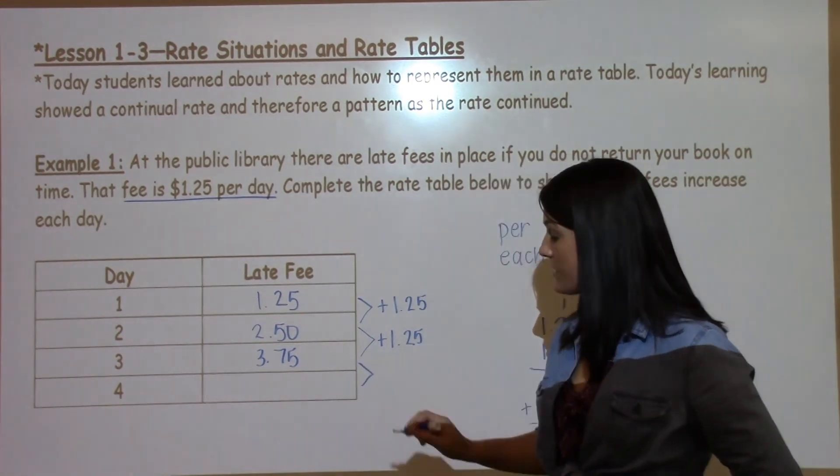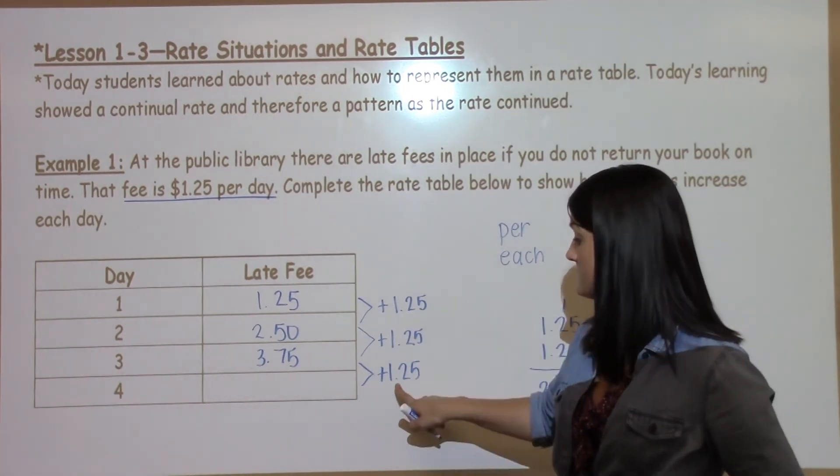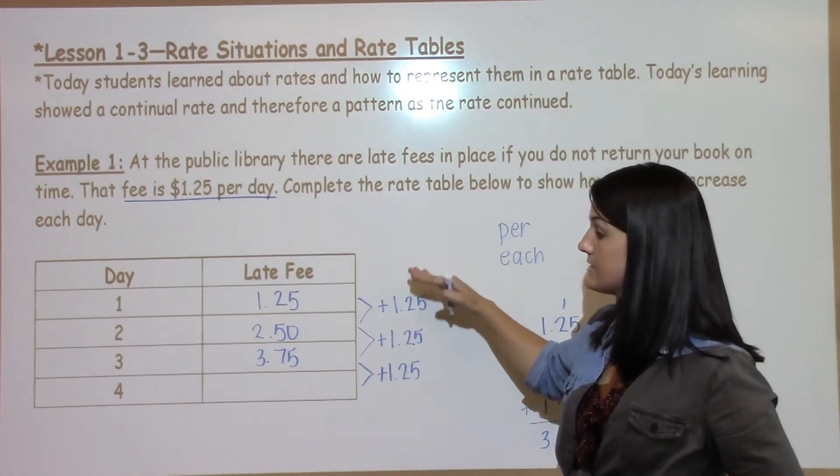And then for the fourth day to find out how much I would owe if I had overdue library books I'm going to add another $1.25 because it is a constant rate.